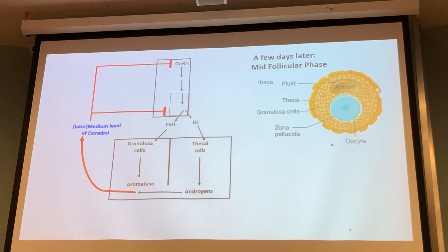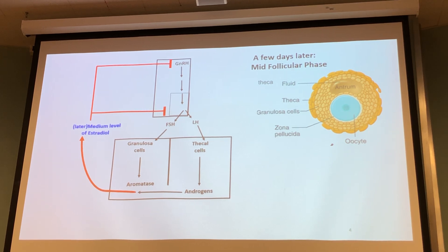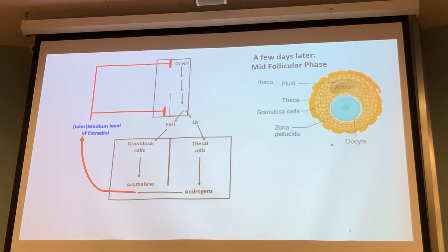Now keep track of how the hypothalamus and pituitary are responding to estradiol — the response is dependent on the level of the hormone. Right now we have medium levels of estradiol doing a negative feedback to decrease the amount of GnRH and to decrease the amount of FSH and LH.